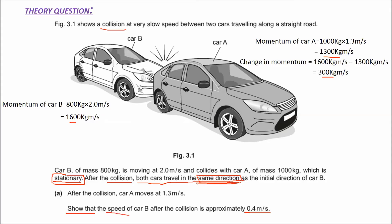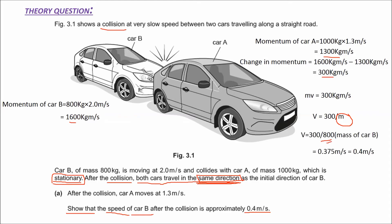To find the speed of car B after collision, V equals change in momentum divided by mass. Since the question asks for the speed of car B only, we use only the mass of car B, that is 800 kilogram. The final answer is 0.375, approximately 0.4 meter per second. Key point: even though it is a collision, since both cars move in the same direction, and we are asked for the speed of only one car, we use only the mass of car B.